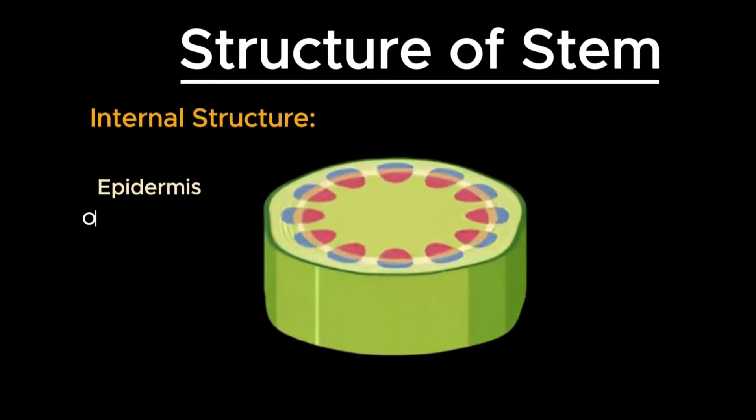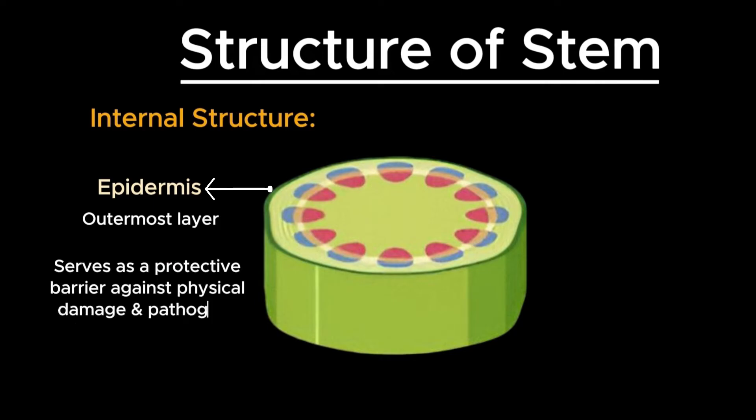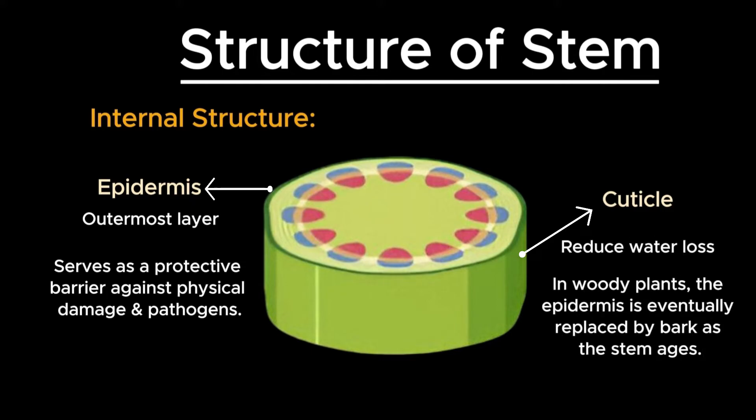The outermost layer of the stem is the epidermis, which serves as a protective barrier against physical damage and pathogens. It may be covered by a waxy cuticle to reduce water loss. In woody plants, the epidermis is eventually replaced by bark as the stem ages.